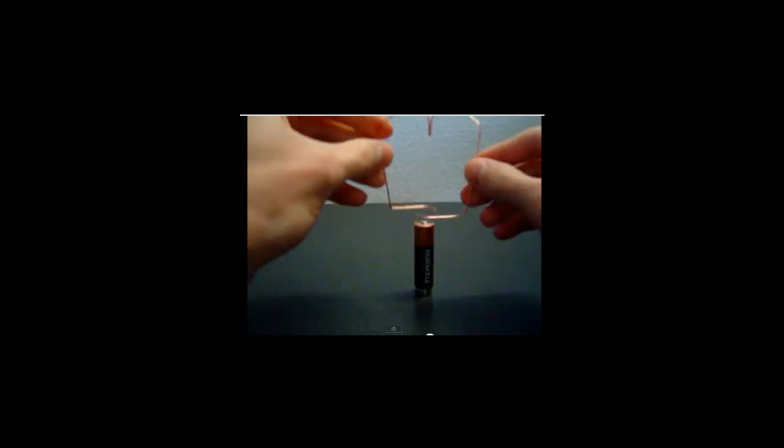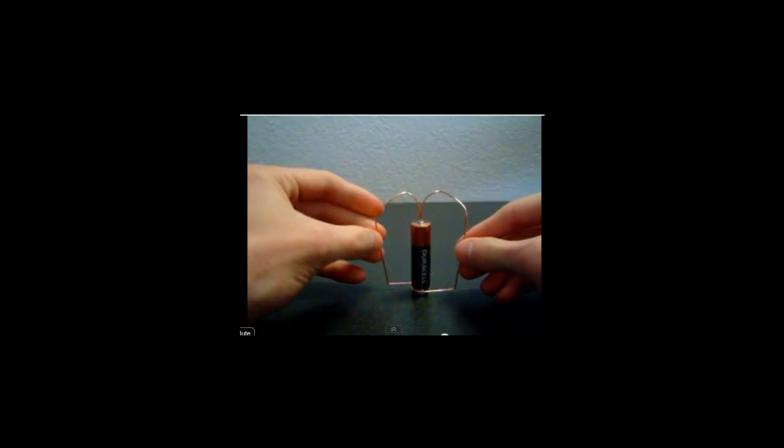All right, what we have here is a clip of a homopolar motor, and we looked at this last year and we'll look at it again if we have time in class tomorrow. But what we've got is a tiny little magnet down there, a little neodymium magnet, and then a battery. This guy's going to drop onto that, this copper wire, so we're going to have a current running in the wire through the battery, and I guess we're going to see what happens.